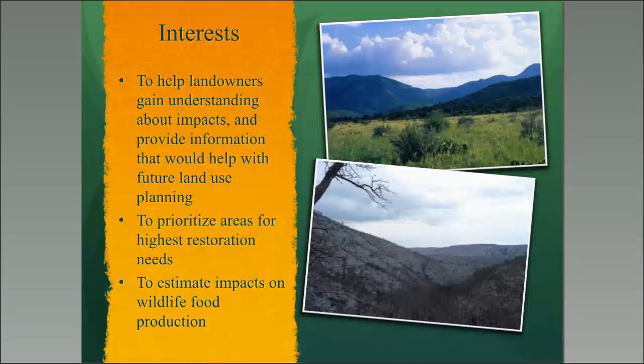We wanted to be able to provide information that would help landowners with their future land use planning. Most of their land use was cattle production or wildlife habitat conservation. The other interest we had was being able to prioritize areas for the highest restoration needs, because when you have these types of wildfires across huge landscapes at such catastrophic levels, you're going to have a wide range of impact from low to severe across that landscape, and you'll want to identify those areas with the highest restoration needs.